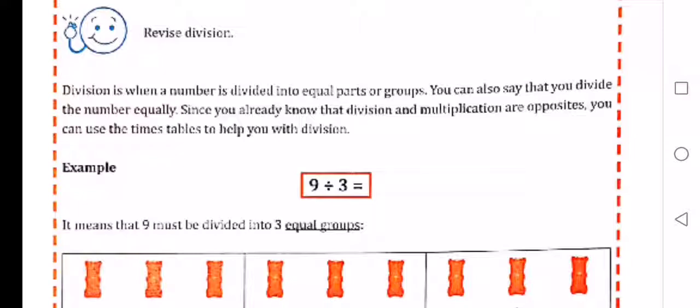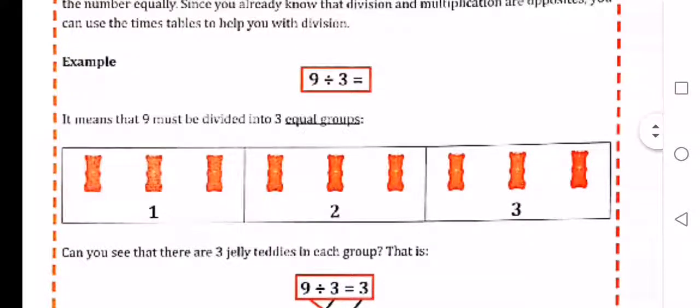Example: 9 divided by 3. It means that 9 must be divided into 3 equal groups. They show you 1, 2, 3 groups, and in each group there's going to be 3 gummy bears.